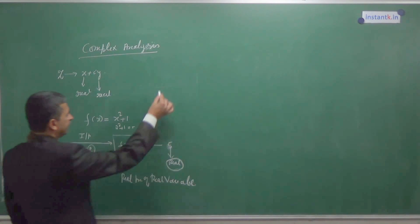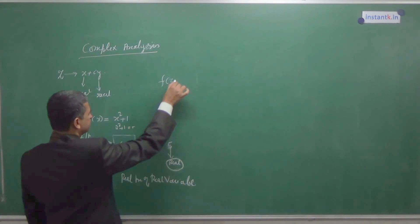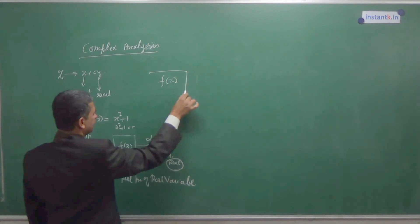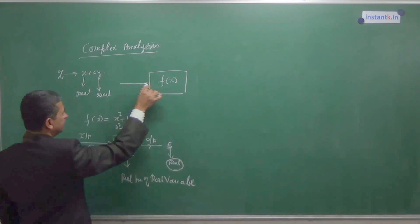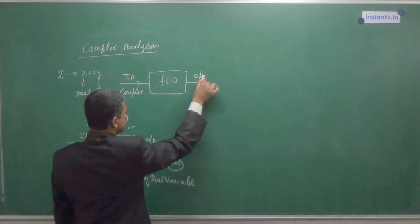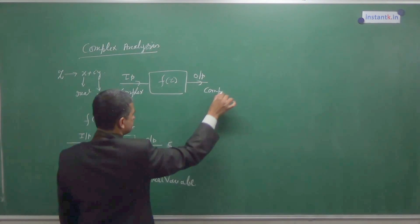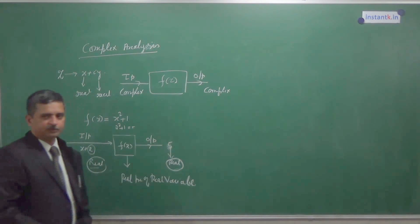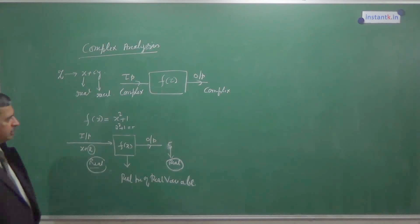Now let us see what you mean by complex valued complex function. For this function, what you are giving input is a complex number. The output should be a complex number. Then we say F of X is complex valued complex function.